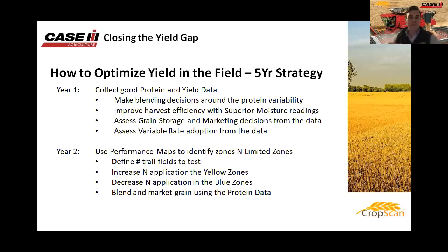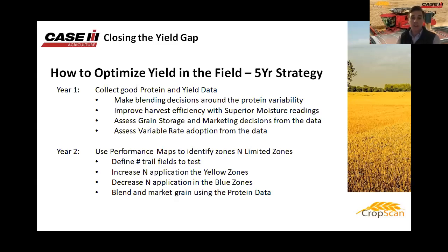Year two: once we have that data, we can quickly define where nitrogen is limited. The first step is working out where N is limited and improving decision-making around those zones — not asking you to do the whole farm, just picking key paddocks. Increase nitrogen on the yellow zones and decrease applications on the blue moisture-limited zones where nitrogen utilization is poor. We still have the option to blend grain using the protein data layer.